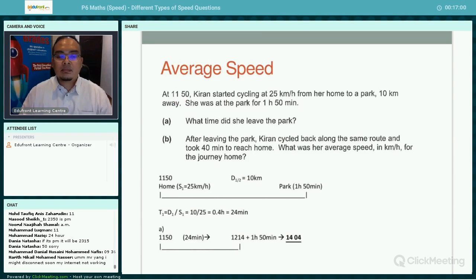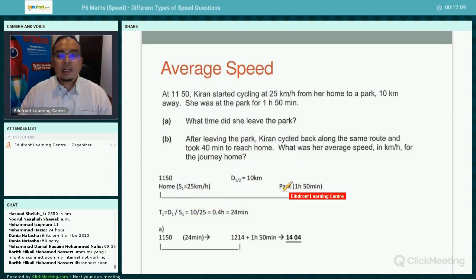Let's draw the timeline here and put all the information inside. She starts the journey at 11.50. Speed 1 means the first part of the journey from home to the park. Speed 1 is 25 kilometers per hour and the distance is 10 kilometers.